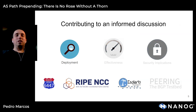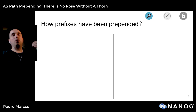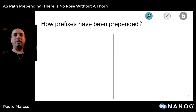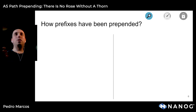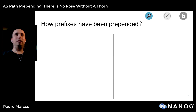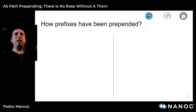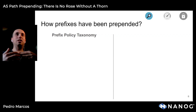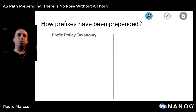Starting with the deployment of path prepending, we observed that prepending is a widely deployed traffic engineering technique. We then tried to understand how prefixes have been prepended by ASes — specifically how ASes are prepending their own prefixes. To that end, we created a taxonomy with four different classes of prefixes.